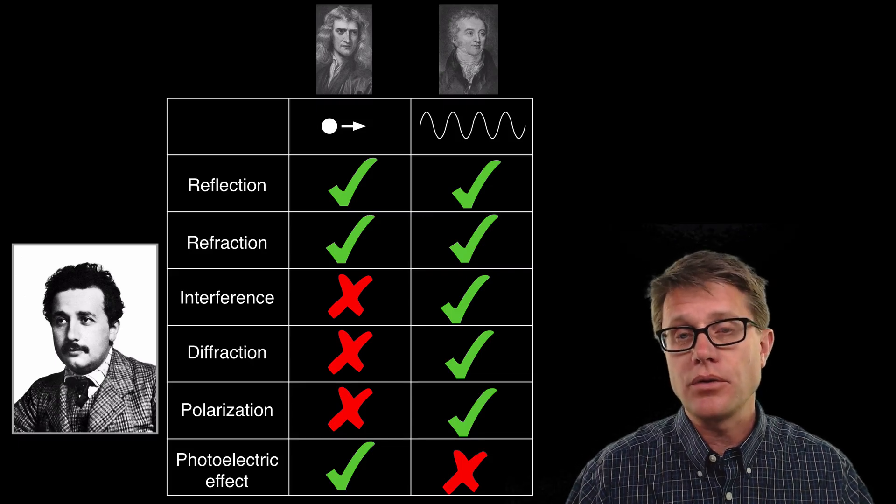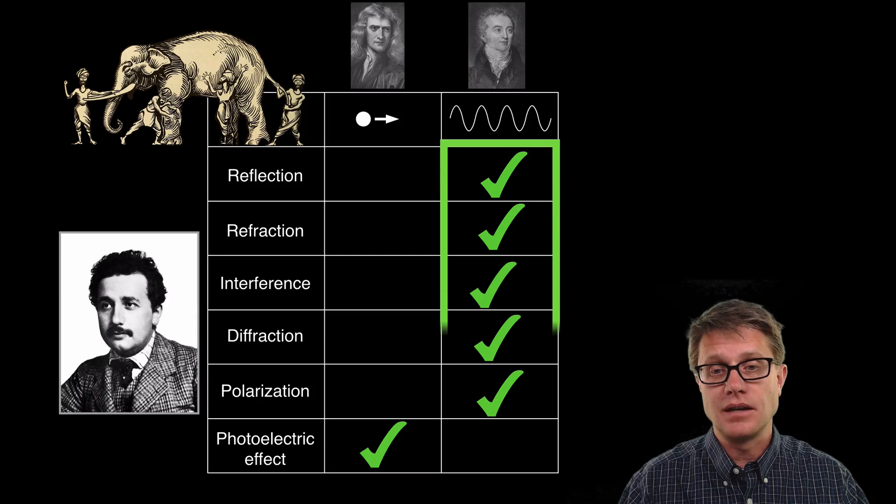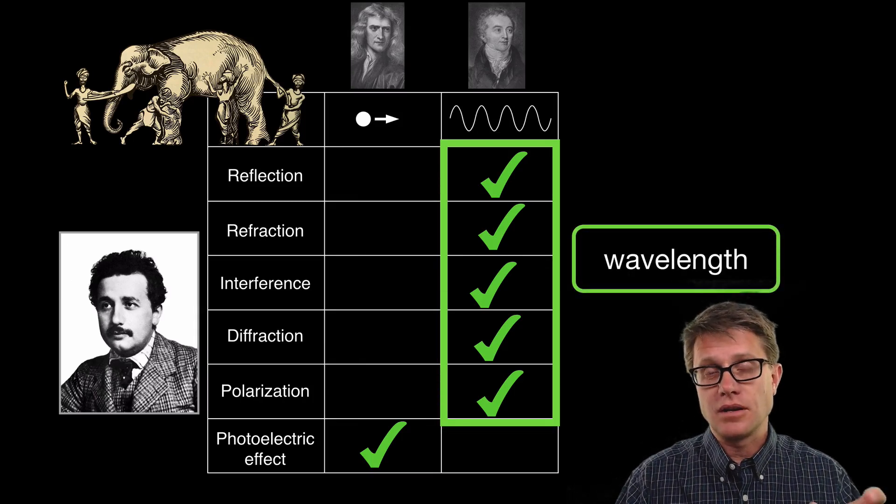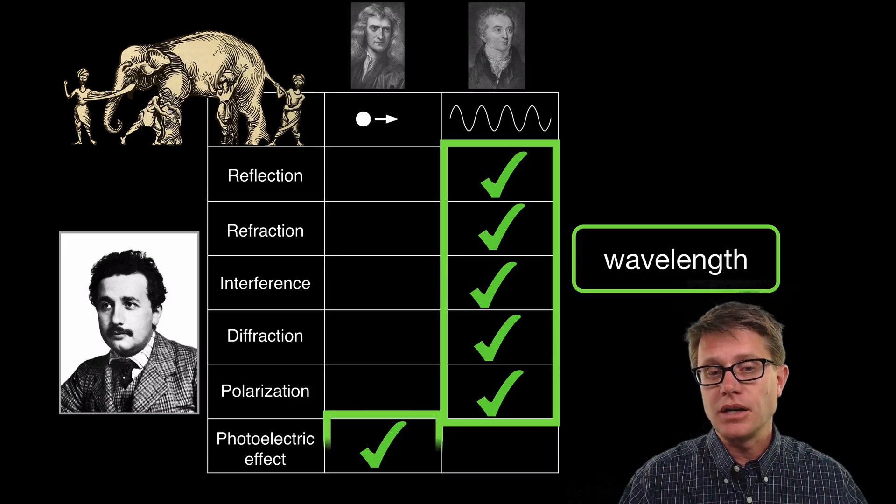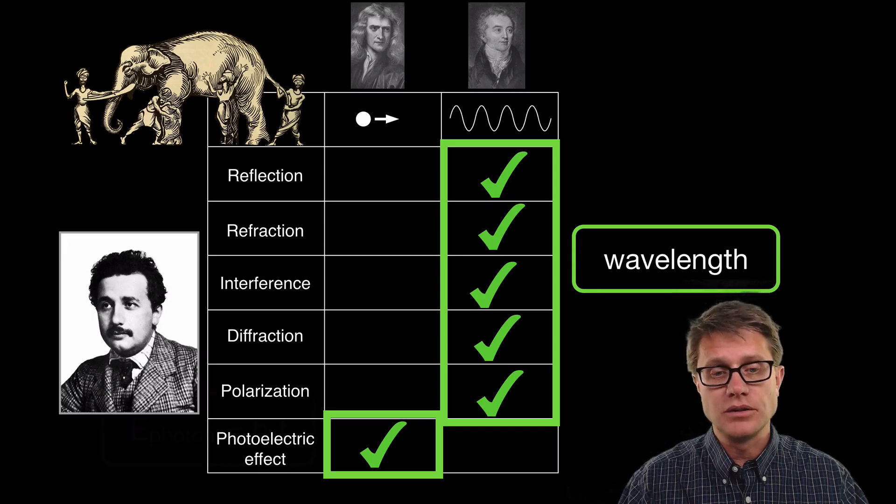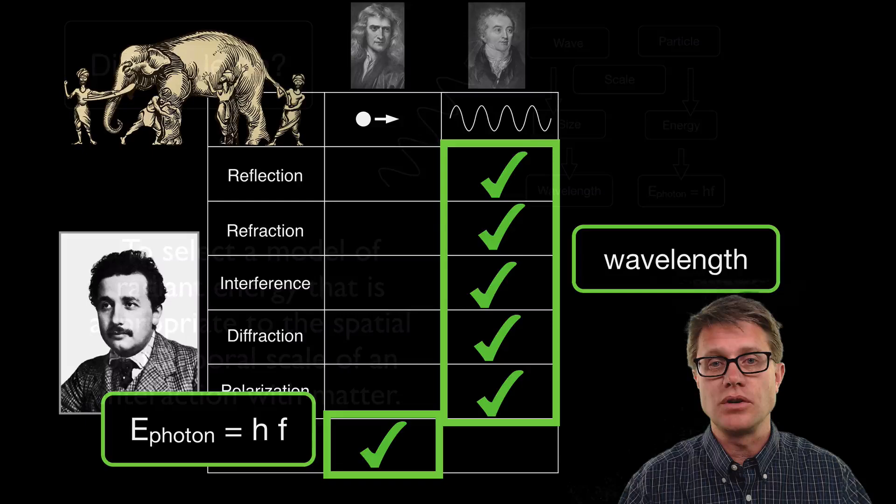And so what is the answer? Well both are right. And so how do we know which model to use? Again it is a sense of scale. If we are looking at objects that are comparable to the wavelength of the light, then we use the wave model. But if we are looking at experiments where the energy is comparable to the energy of a photon, it is going to be a really small amount of energy, then we have to treat them as a particle.